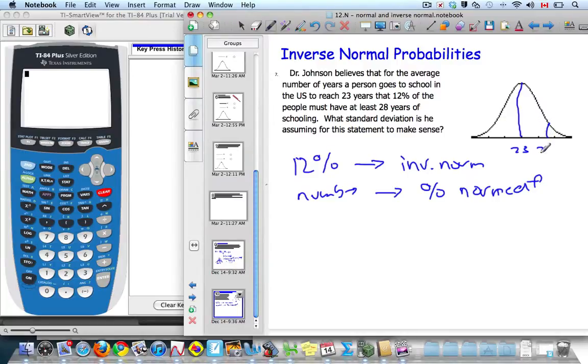That means, well, here's 28. That means this area here has to be 12%. That means the other area on this side is 88%.